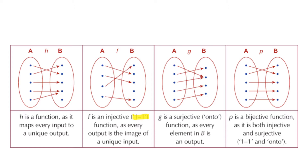The third box is function G, which is surjective — that's an onto mapping. Every element of B is used. When we put in every value of X, every value of Y is used. We need to talk about the difference between the codomain and the range. The domain, which is the X values, is represented by bubble A in each diagram.